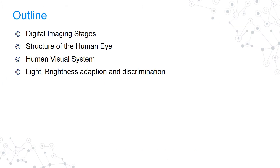In this class we would be covering the basic steps of digital imaging stages. We would see the structure of a human eye, how we perceive information or an image, and then we will study the human visual system in detail. To visualize what we require is light, so we will see the effect of light, the electromagnetic spectrum, and the adaptation of brightness and its discrimination in perceiving the scene.